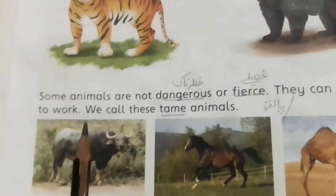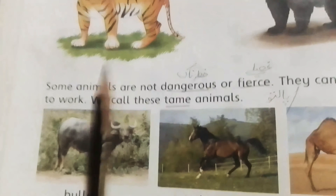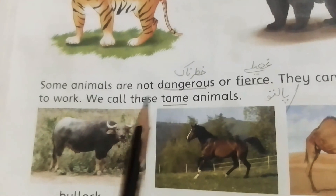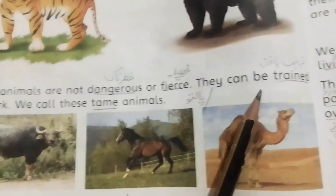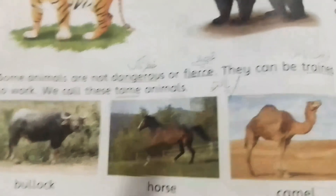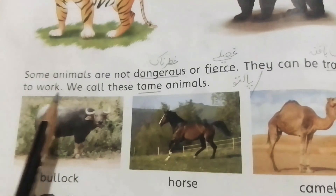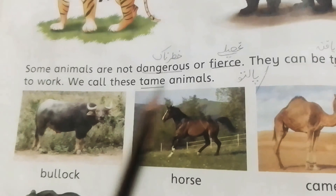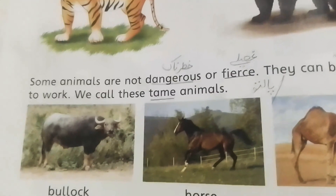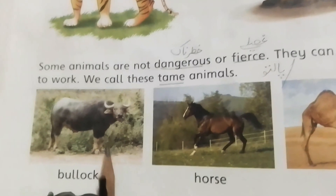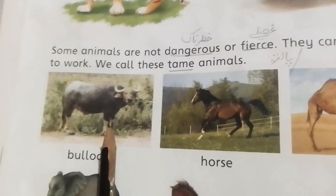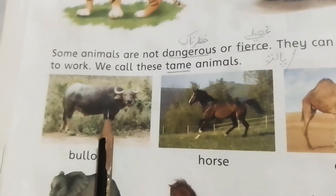Some animals are not dangerous and are not fierce — they don't get angry when they see a human. They can be trained to work. We call these tame animals. Pet animals we take no work from, whereas tame animals we use for work and they are trained — like bulls.